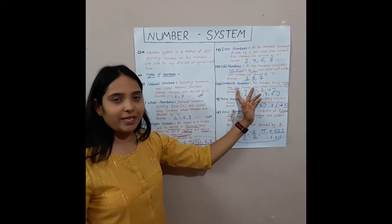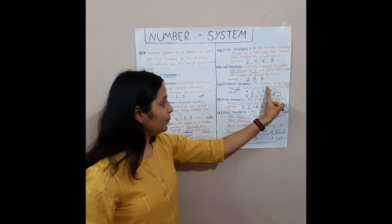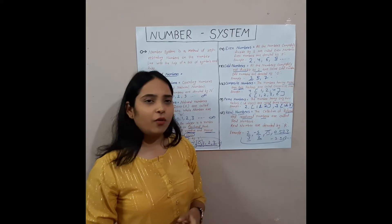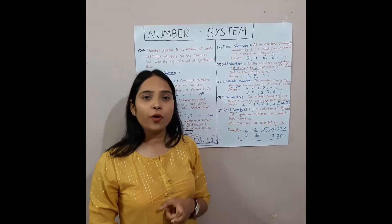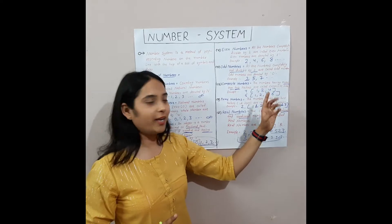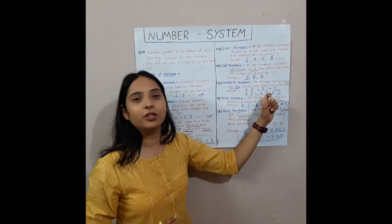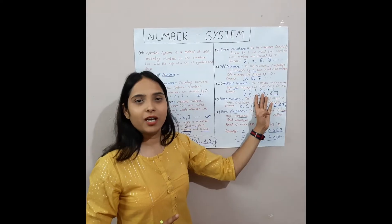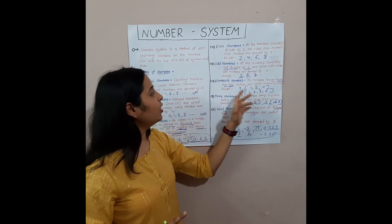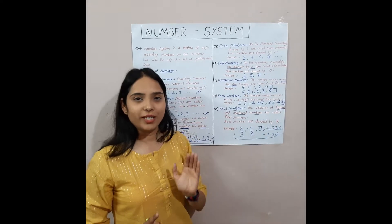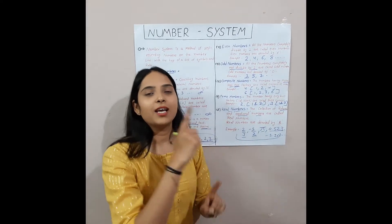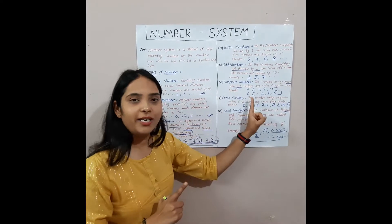Next is the composite number. Numbers having more than 2 factors are called composite numbers. For example, 4 has 3 factors: 1, 2, and 4. And 6 has 4 factors: 1, 2, 3, and 6. Both have more than 2 factors, so we can say numbers with more than 2 factors are called composite numbers.